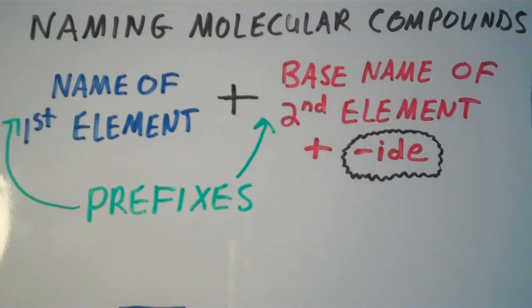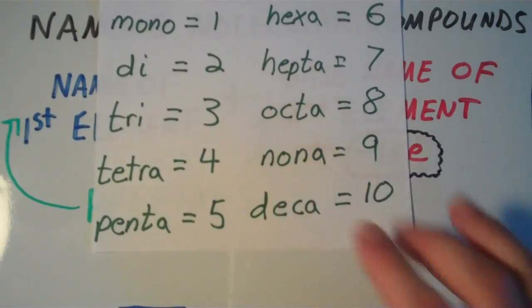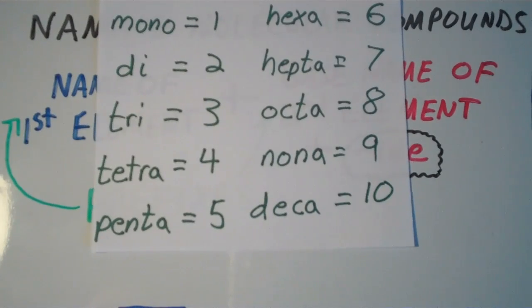The prefixes are as follows: mono is the prefix for one, di for two, tri for three, tetra for four, penta for five, hexa for six, hepta for seven, octa for eight, nona for nine, and deca for ten. Those are the first ten prefixes that we use when we talk about molecular compounds.